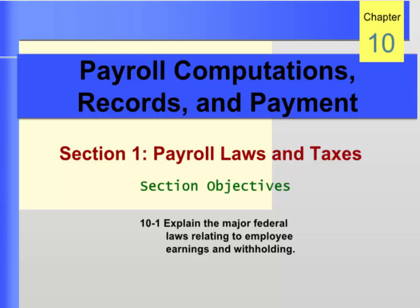This chapter continues the study of business accounting by discussing payroll accounting. Section 1 explains the major federal laws relating to employee earnings and withholdings, which is the first objective of the chapter.